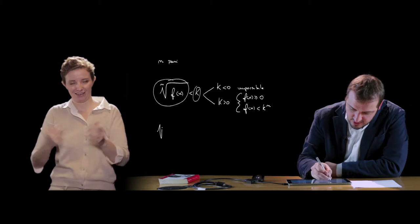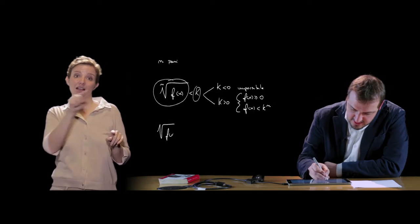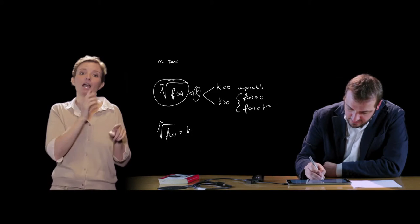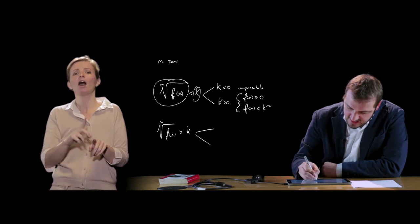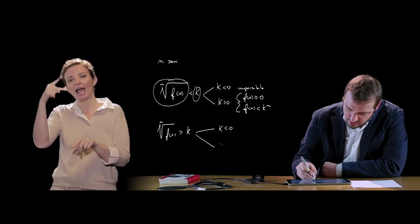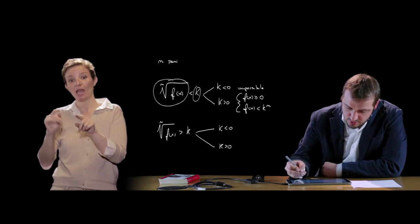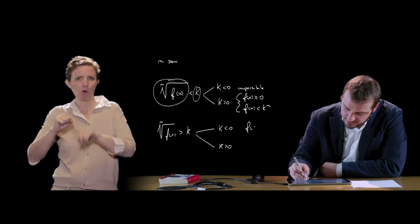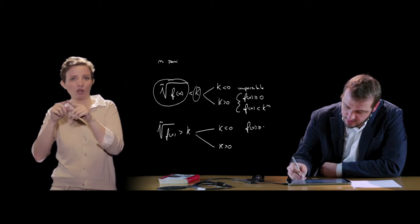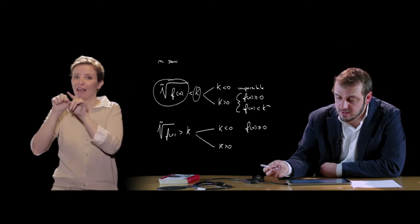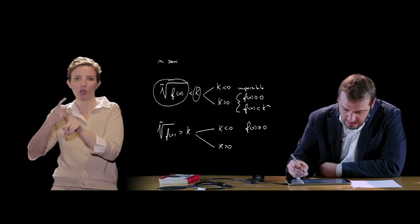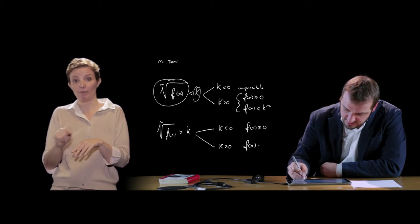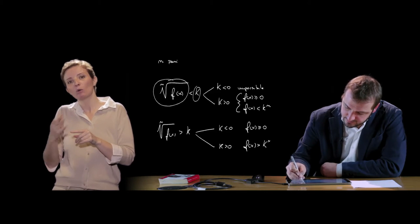Vediamo quando è che la radice ennesima di f(x) è maggiore di k, ancora nei due casi: k minore di zero e k maggiore di zero. Se k è minore di zero è possibile come soluzione, ma solo nel caso in cui esiste il radicale, quindi f(x) è maggiore o uguale di zero. Se k è maggiore di zero invece è sufficiente andare a vedere quando è che f(x) è maggiore di k alla n.